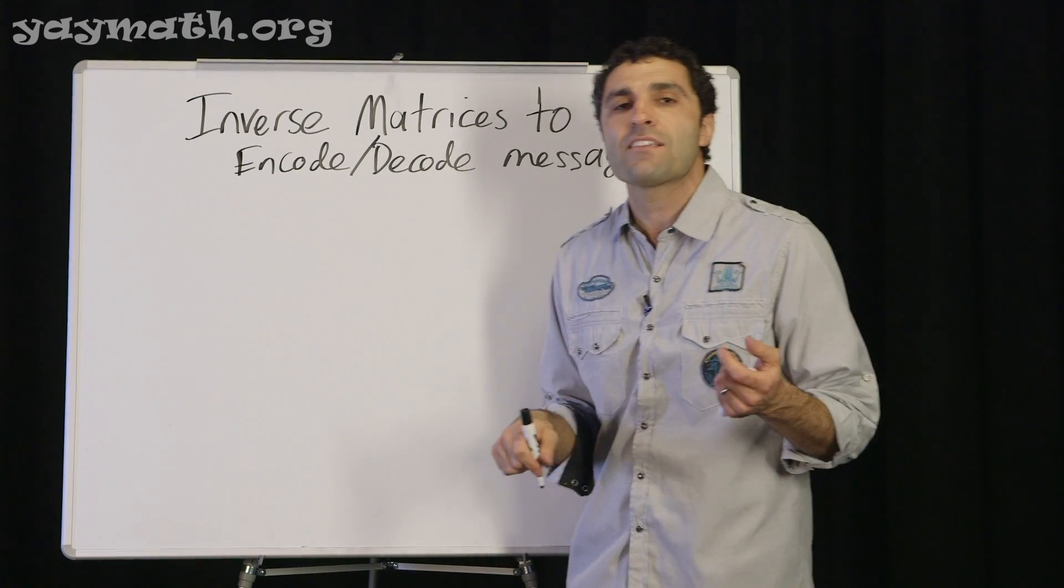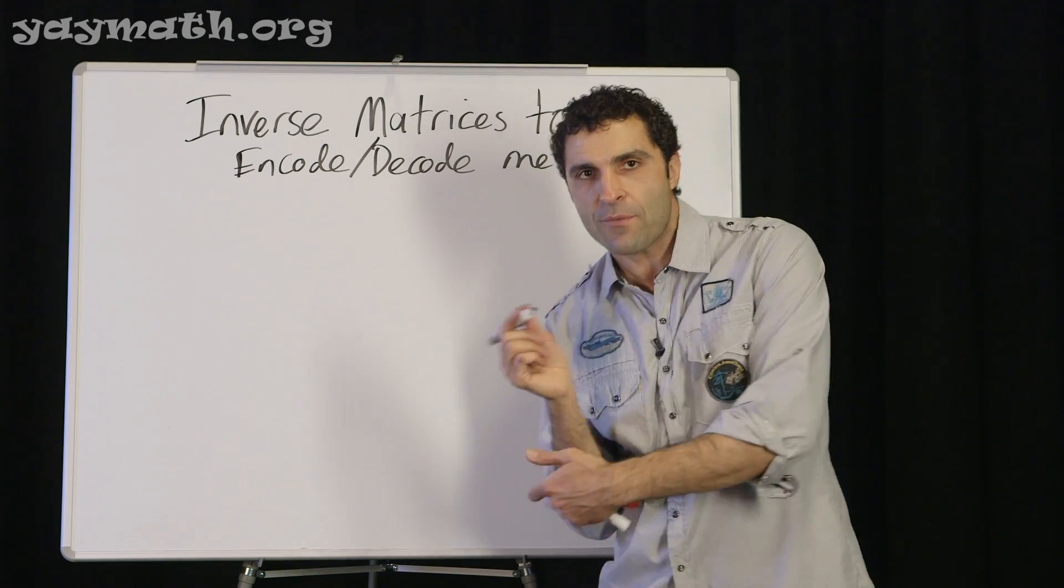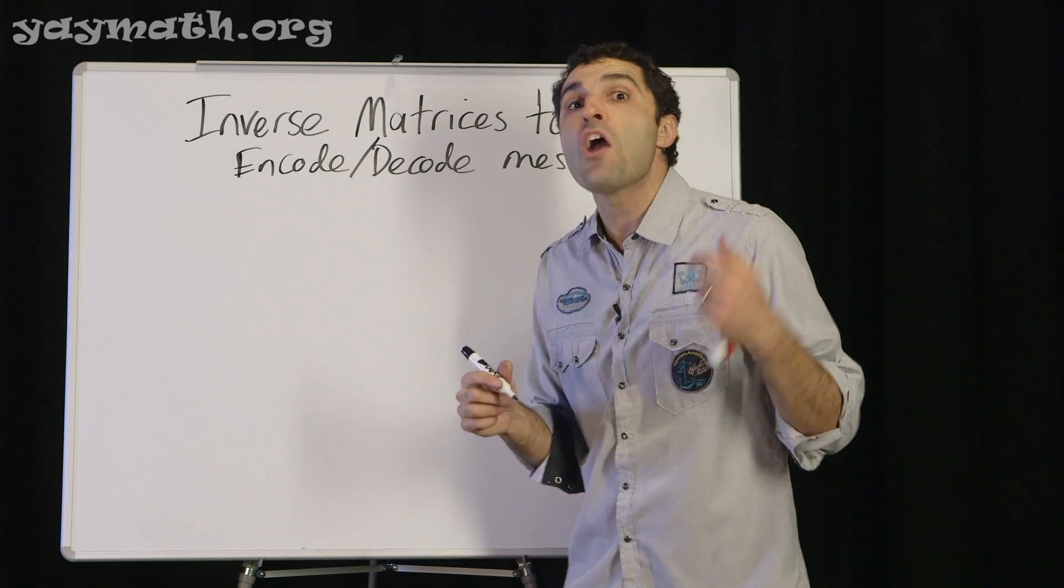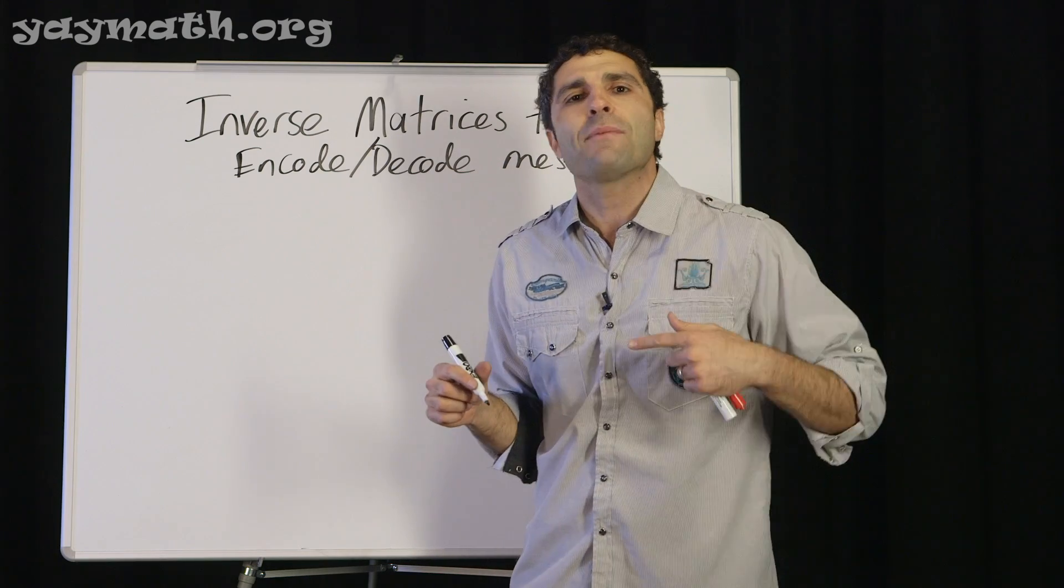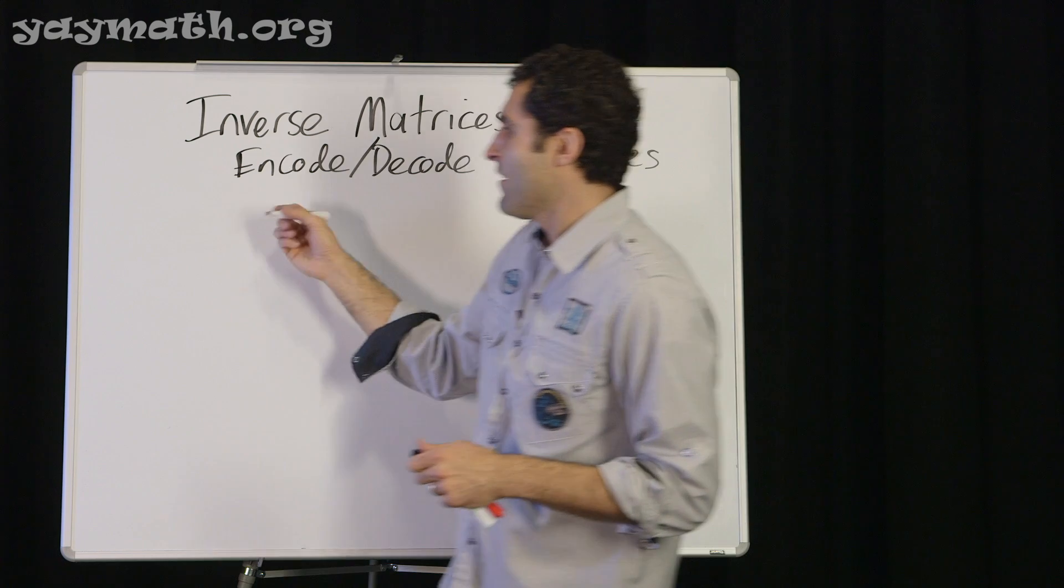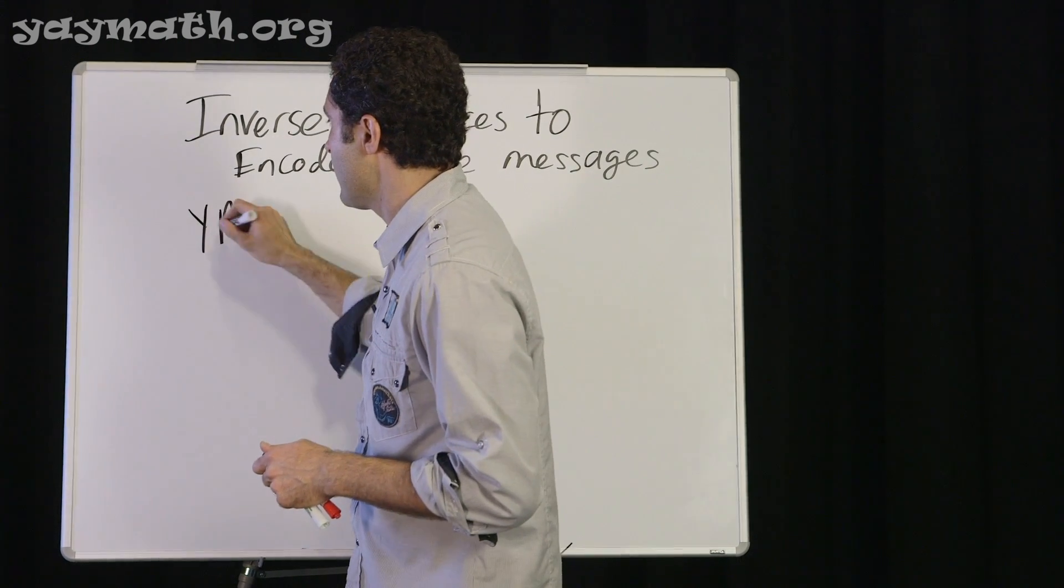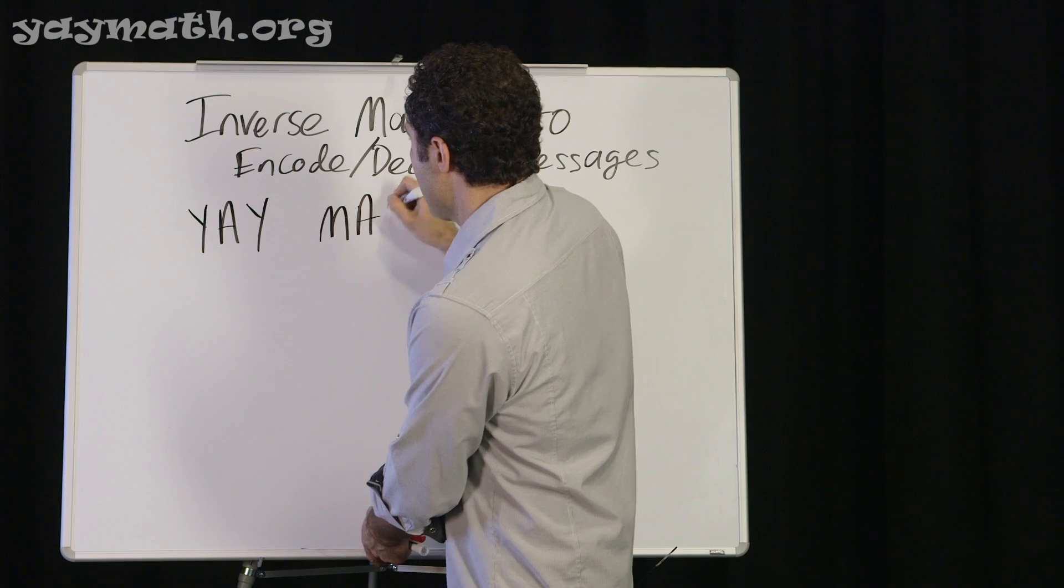First, we have to pick a message to encode. We're going to pick a message to turn into numbers, and then make those numbers secret so that no one knows what they mean except us. And that message, of course, is yaymath. We're going to do it. Y-A-Y. Math.